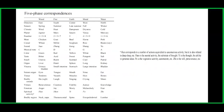For wood: direction is east, season is spring, climate is wind, planet is Jupiter, number is 3+5=8, meat is chicken, cereal is wheat, sound is jue, musical note is C, color is green, taste is sour, smell is rancid, organ is liver, viscera is gallbladder, sense organ is eyes, tissue is tendons, bodily sound is sighing, virtue is benevolence, emotion is anger, spiritual activity is hun, and bodily region is the neck and nape.